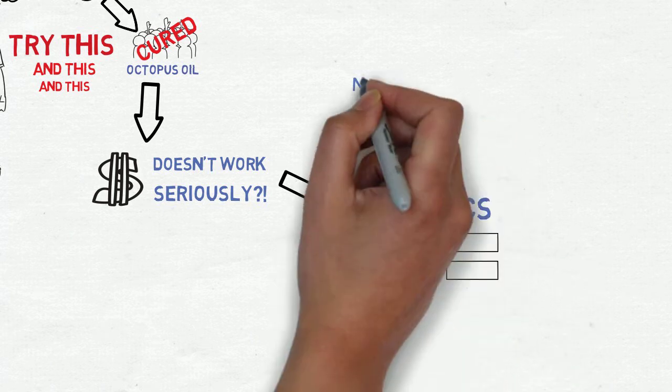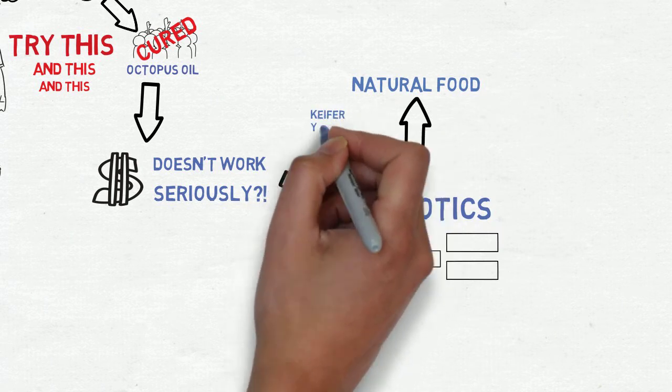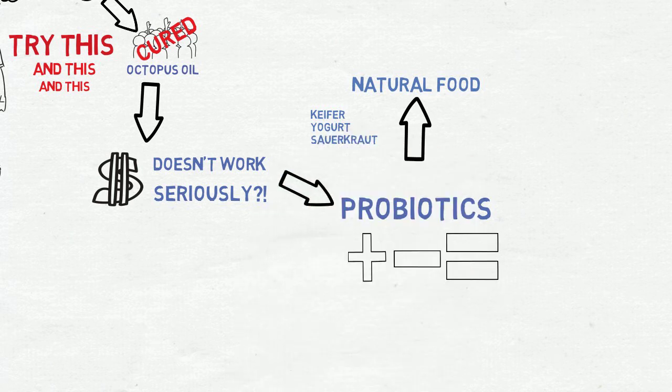As a side note, I always recommend trying to add the nutrient in some form of natural food in addition to the supplement. For probiotics, this would be fermented foods such as kefir, high-quality yogurt, or sauerkraut.